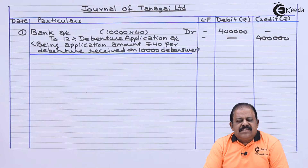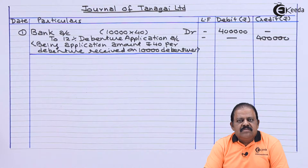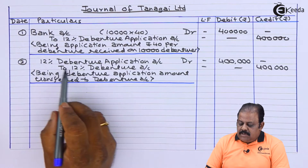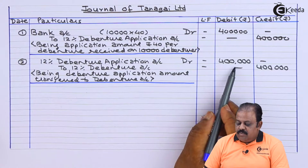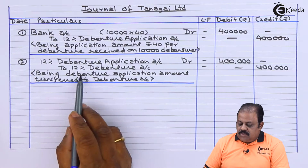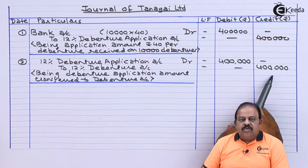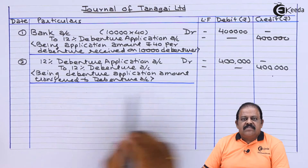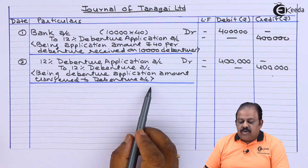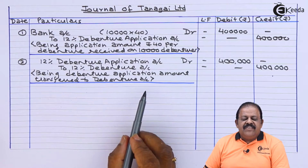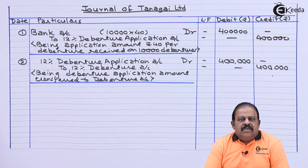This amount will then be transferred to the debenture account — that will be the second entry. 12% debenture application account debit 4 lakhs; to 12% debenture account 4 lakhs, being debenture application amount transferred to debenture account. Here we have completed the application stage.